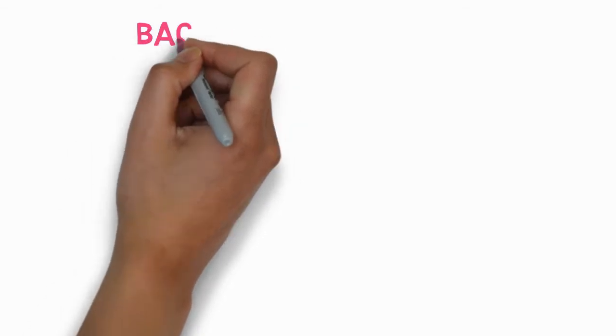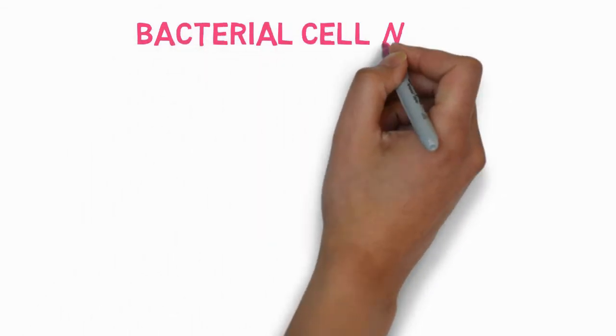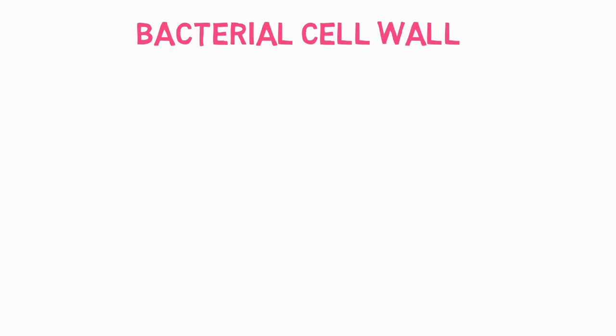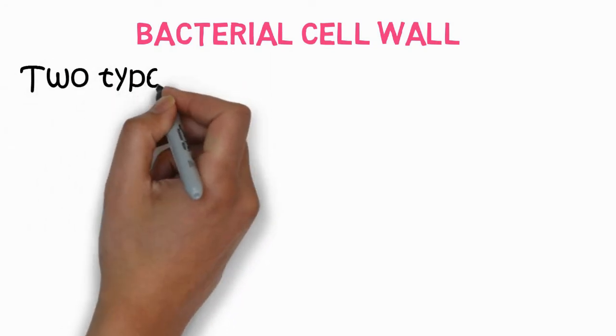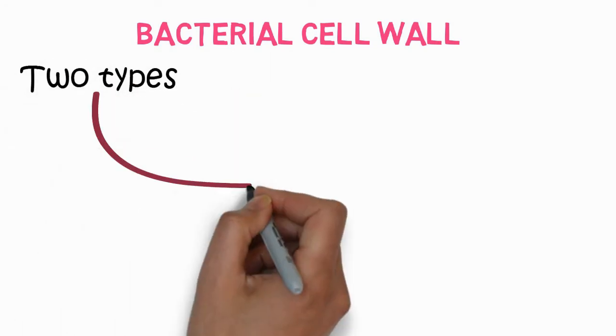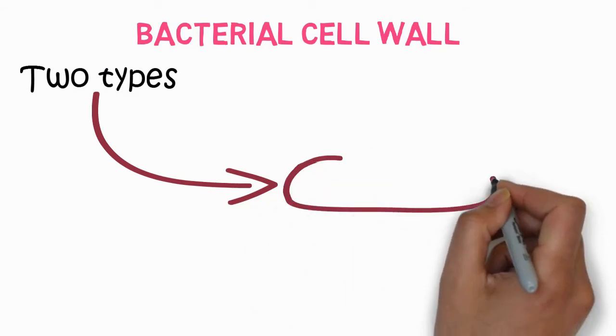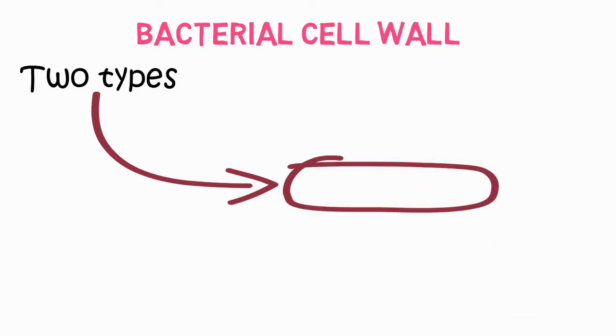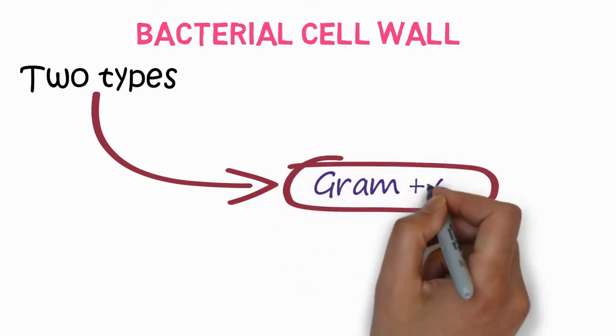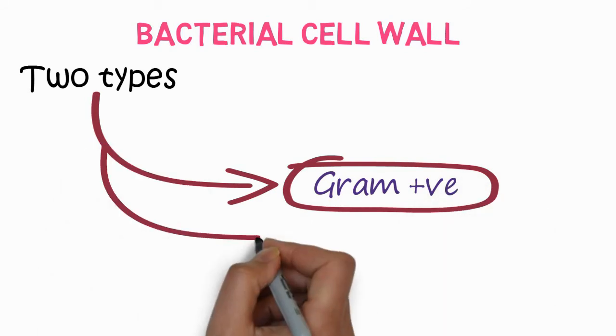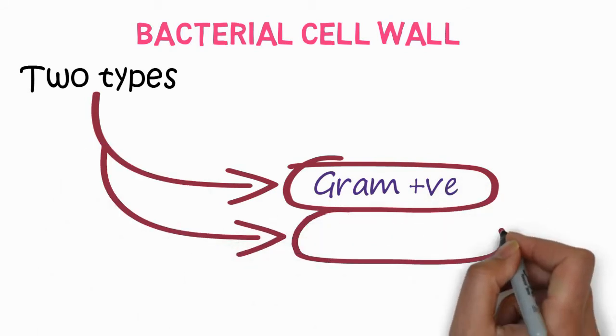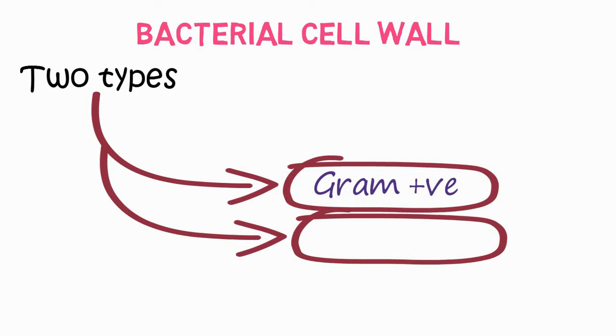Now, bacterial cell wall. In bacteria, there are two types of cell wall present. One is known as gram positive, and the second one is known as gram negative. These two types are based upon the staining of bacteria with the gram stain.